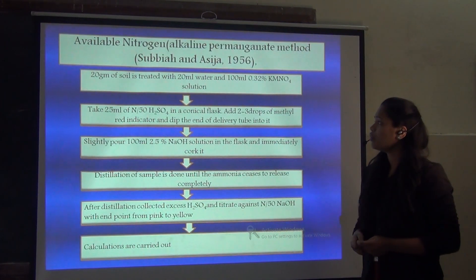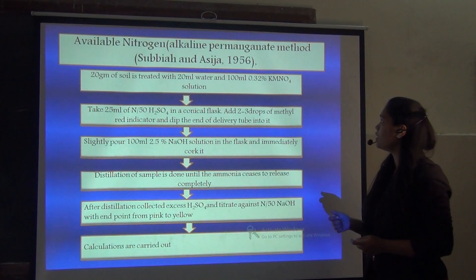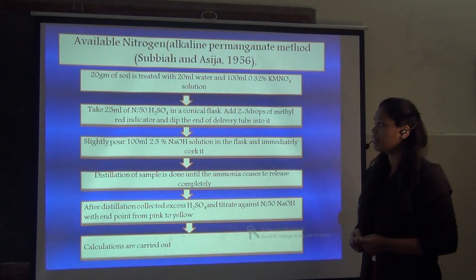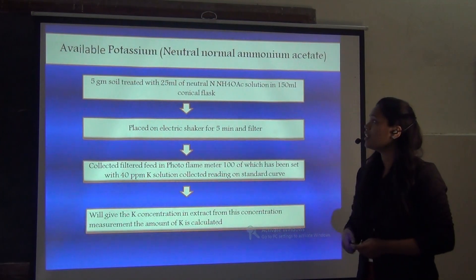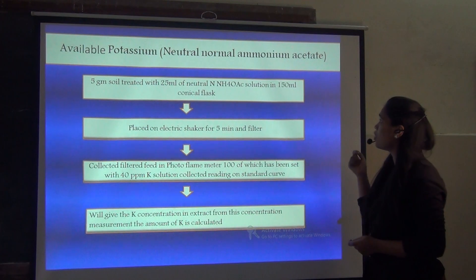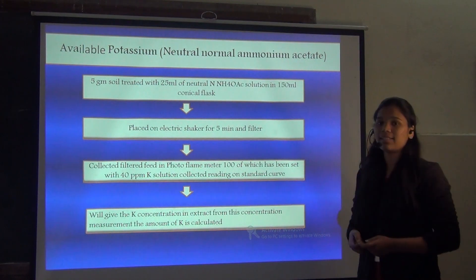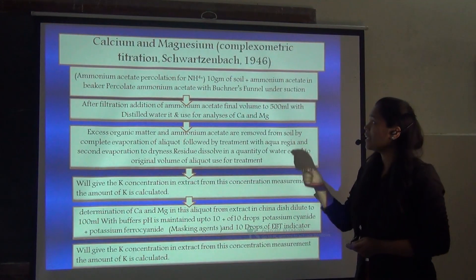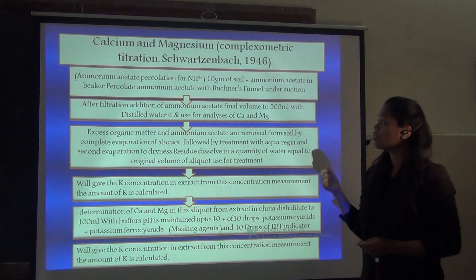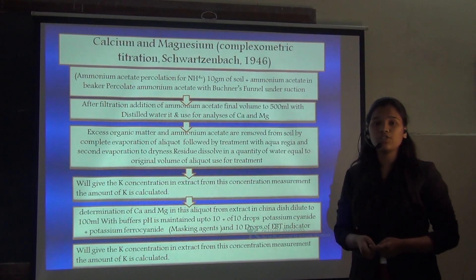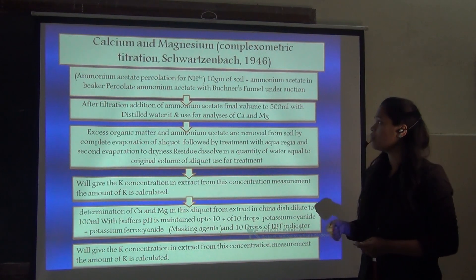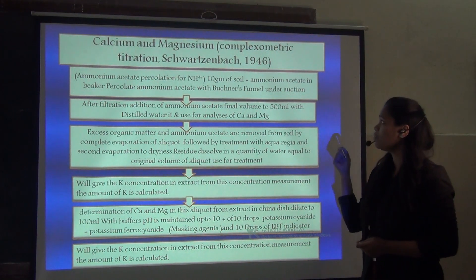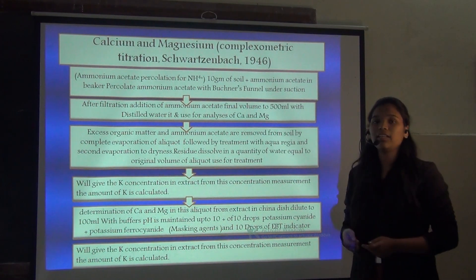For the Phosphorus analysis, for available Phosphorus we use Olsen's method. For the available Potassium we use Neutral Normal Ammonium Acetate method. For the Calcium and Magnesium we use Complexometric Titration method, which is given by Schwarzschild in 1946.